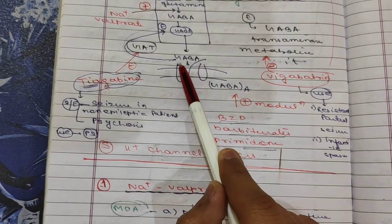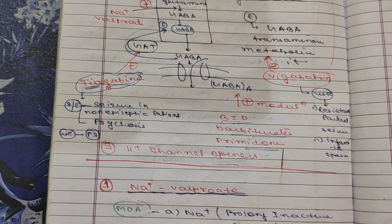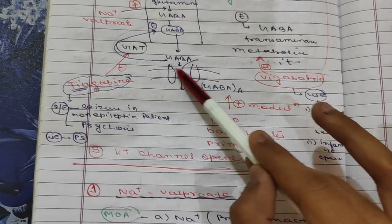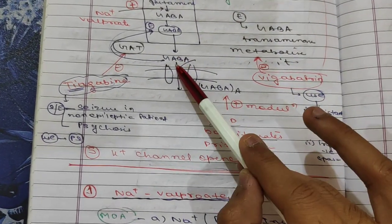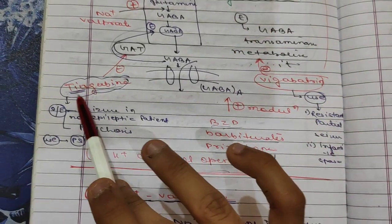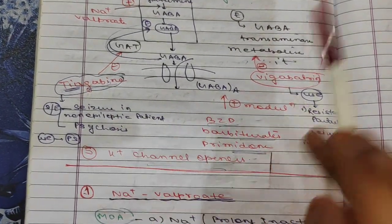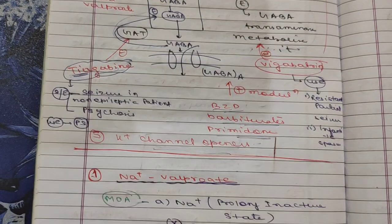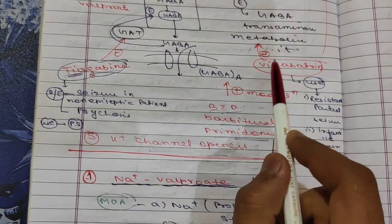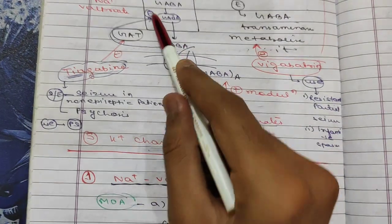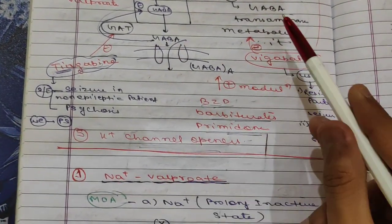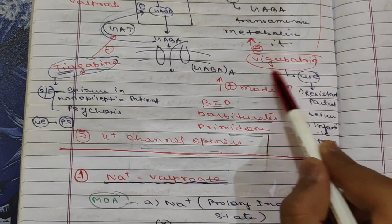Since GABA is an inhibitory neurotransmitter, we want it to remain available to inhibit neuronal overactivity. Tiagabine inhibits the GABA reuptake transporter. There is also an enzyme called GABA transaminase that metabolizes GABA. Vigabatrin inhibits this enzyme, thereby increasing GABA levels.